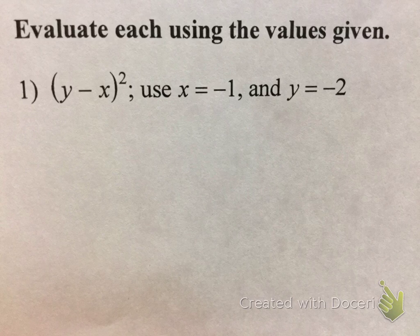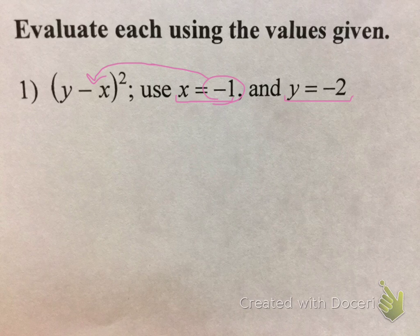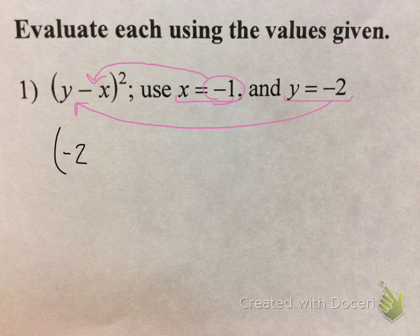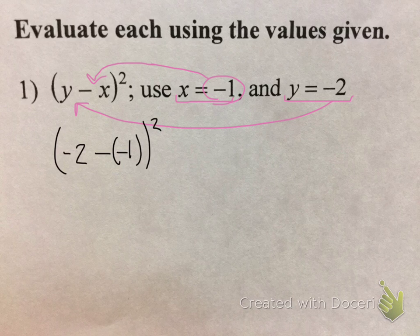Let's look at our first example. We have the quantity y minus x squared, when x equals negative 1 and y equals negative 2. When they say evaluate, that's a fancy way of saying you need to plug in the values. You're going to take that value of negative 1, plug it in where you see the x, and where you see y, you're going to plug in a negative 2. So y is negative 2 minus x is negative 1.